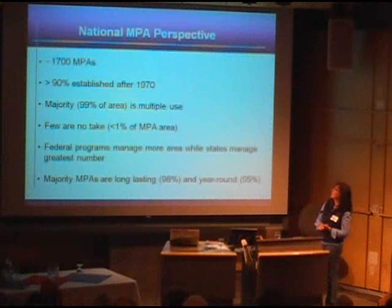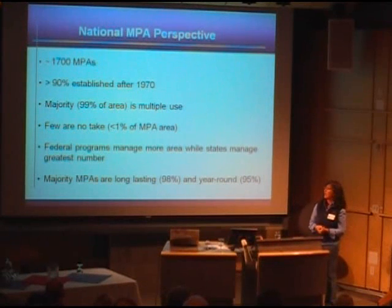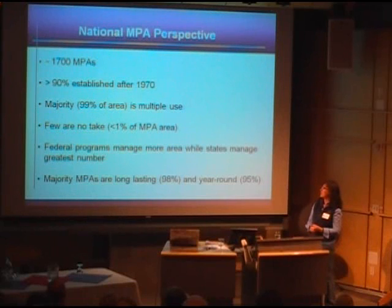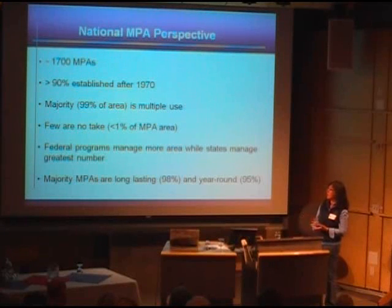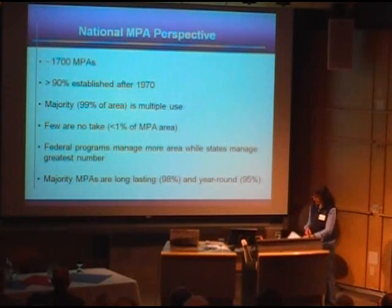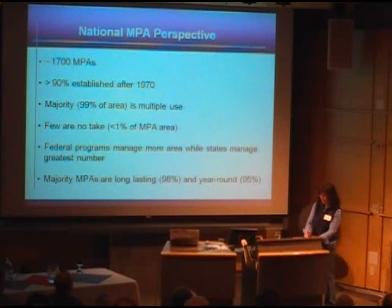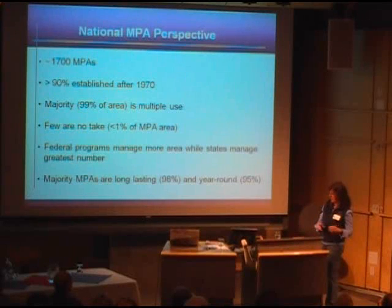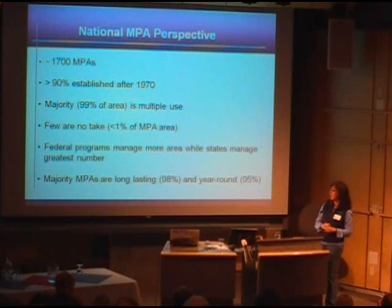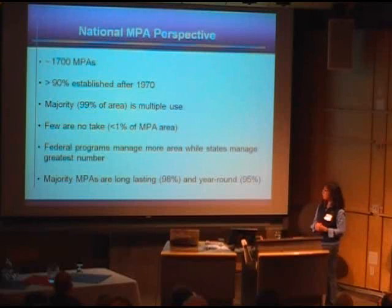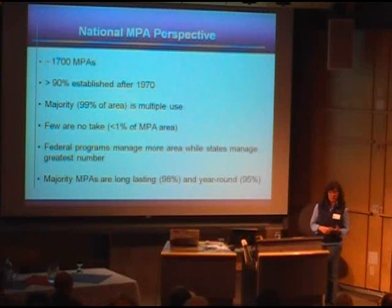A quick overview of national MPAs: there are about 1,700 of them currently, 90% established after 1970. The majority of MPA area is multiple use — so not no-take — and less than 1% is no-take, covering about 8,000 square kilometers across approximately 200 different sites. Federal programs account for more area, while states have the greatest number. The majority of MPAs have been implemented as permanent and year-round, with very few seasonal sites.